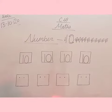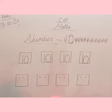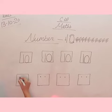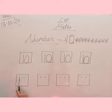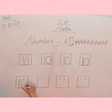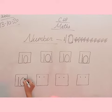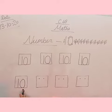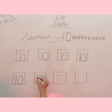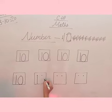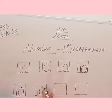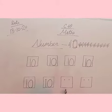Kids, now we will write the number 10, so let's start with me. Start from the dot and make a standing line to the bottom line, then we will make a circle like this. Once again, start from the dot and make a standing line to the bottom line, then we will make a circle.